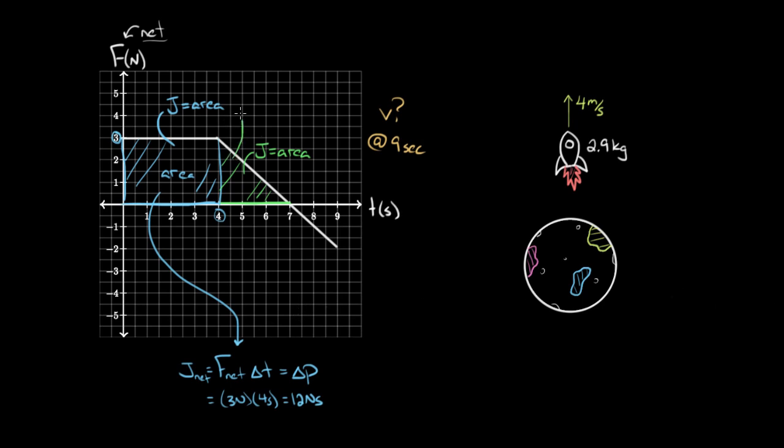Now we can find the impulse for this next section by just determining the area. So this is a triangle. We'll do one half base. The base is one, two, three seconds. And the height is still three newtons. So we get a net impulse of 4.5 newton seconds.